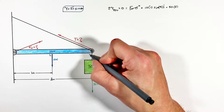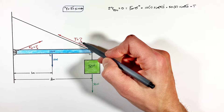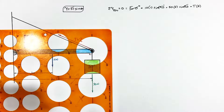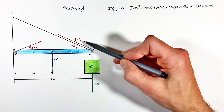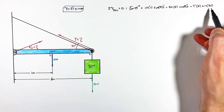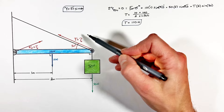Next we have our 50 Newton force acting at a radius of 2 meters, and again this force acts straight down so it's at a right angle to the beam. Last, we have the tension T acting at a radius of 2 meters, with an angle of 30 degrees between the cable and the beam. The 30° angle should have been noted on the drawing — apologies for that. Solving this equation, the only unknown is T, and we find the tension in the cable is 110 Newtons.